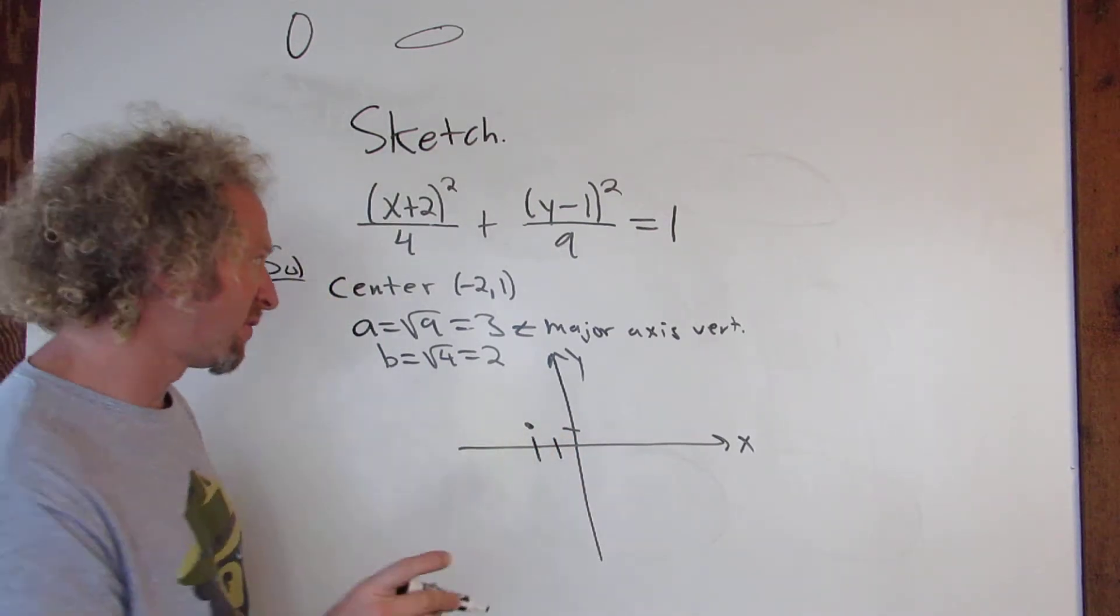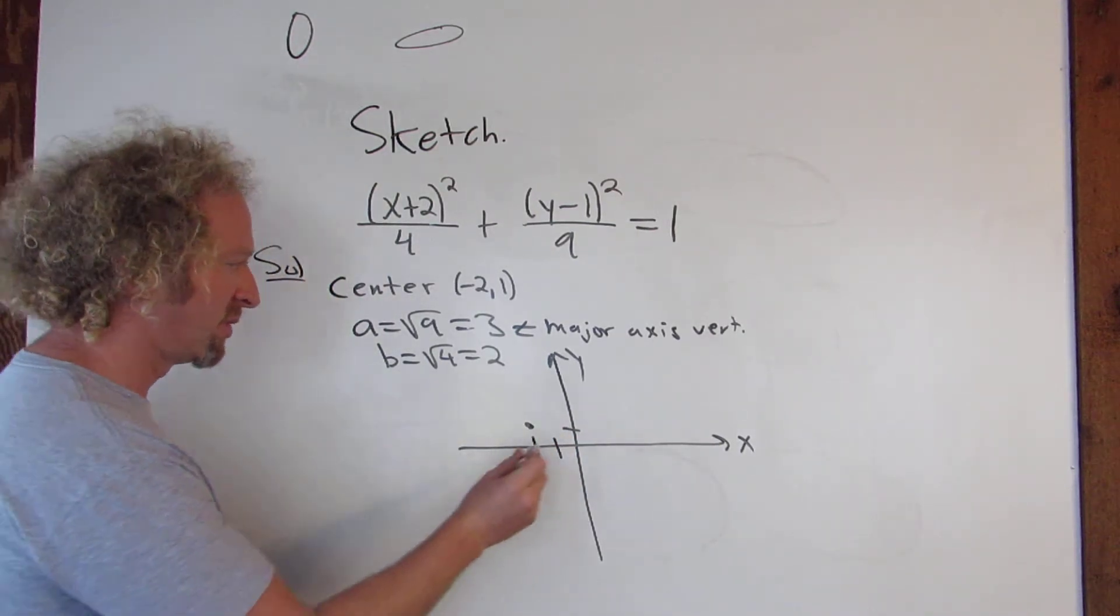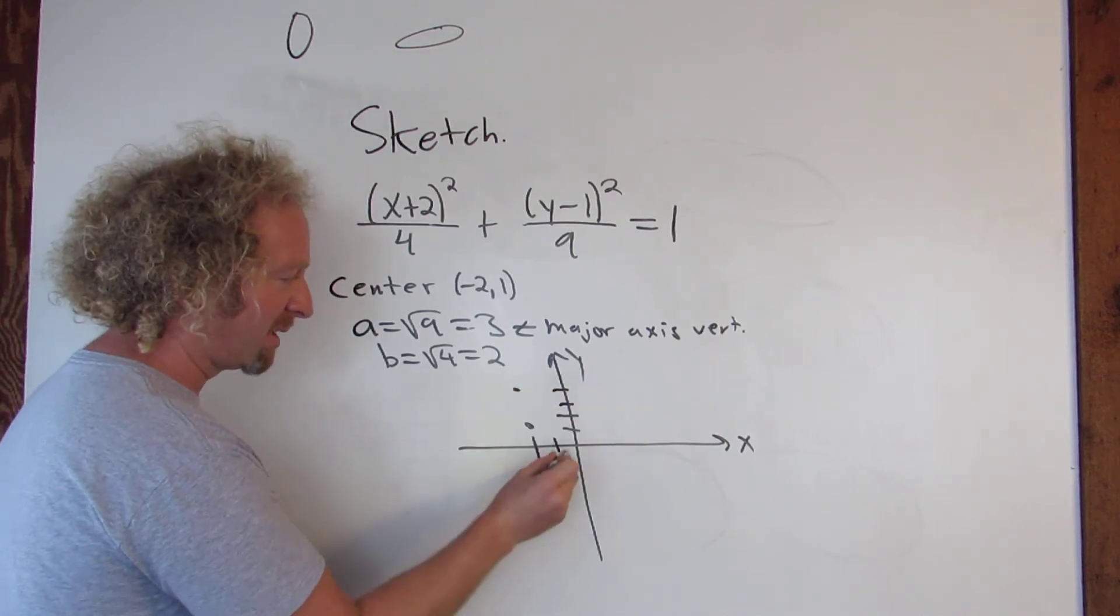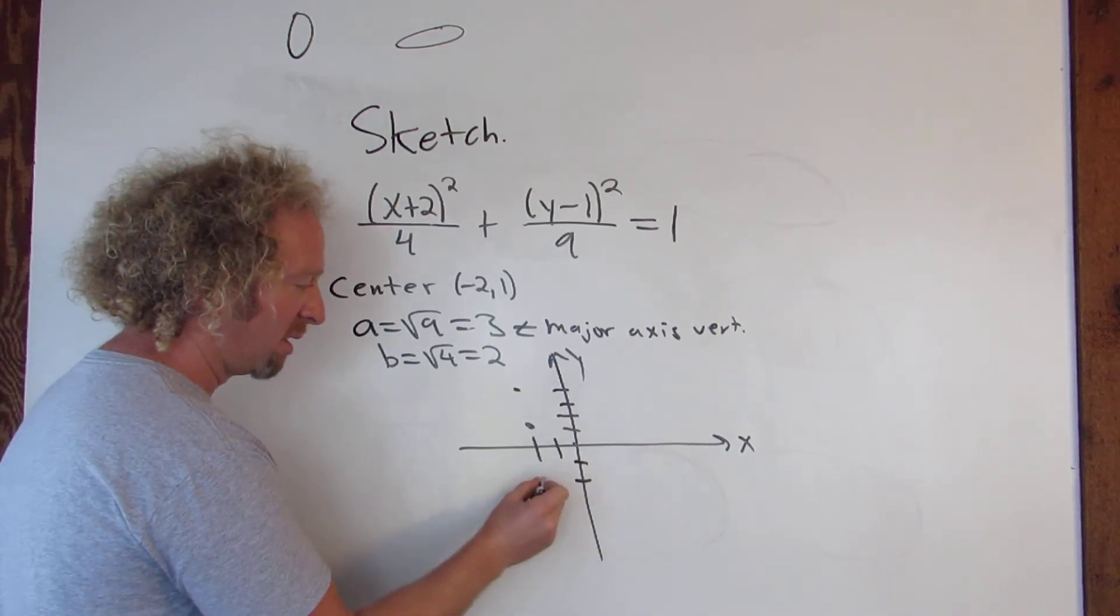So because the major axis is vertical, we're going to go up and down by 3. So 1, 2, 3, boom, put a dot. 1, 2, 3, boom, put a dot.